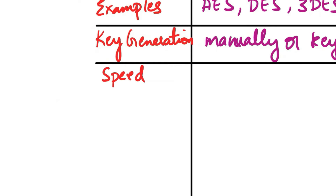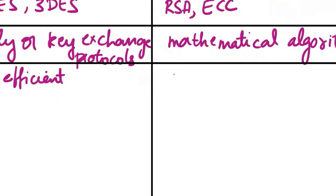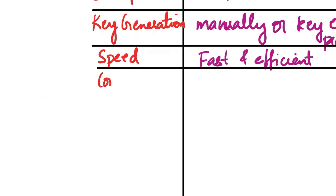The next aspect is speed of encryption and decryption. Symmetric cryptography is fast and efficient due to the simplicity of using a single key. Asymmetric cryptography is slower due to complex mathematical operations, especially for large data sets.